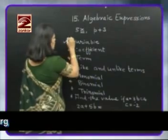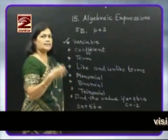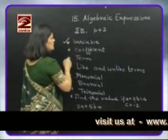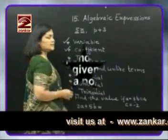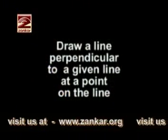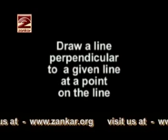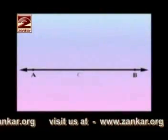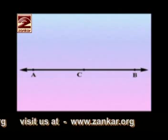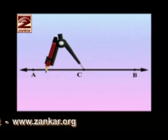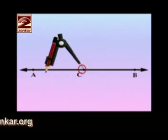The letter used here is called a variable, as its value changes. Now, drawing a line perpendicular to a given line at a point on the line: draw line AB, take point C anywhere on line AB. By taking a convenient distance, place the point of the compass on point C and draw two arcs.